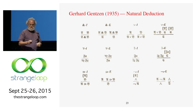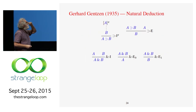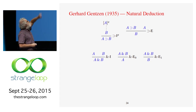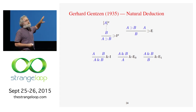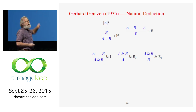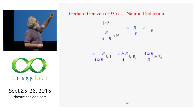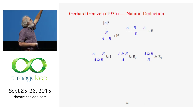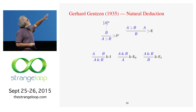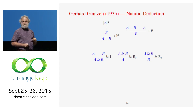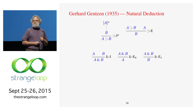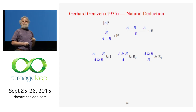The elimination rule for implication says: if you know A implies B, and you know A — those are two hypotheses above the line — then below the line you know B. That's how you make use of an implication. How do you create or introduce an implication? Those brackets around the A mean "assume A" — don't prove A, just assume A is true. If from assuming A is true you can get a proof of B, then you know A implies B.